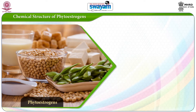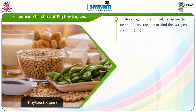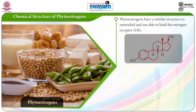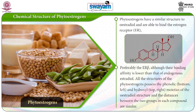The phytoestrogen classes mentioned above have a similar structure to estradiol, that is the naturally occurring estrogen, and are able to bind to the estrogen receptors, preferably the beta estrogen receptors, although this binding affinity is lower than that of endogenous estradiol. All structures of phytoestrogens possess the phenolic and the hydroxyl moieties of the estradiol structure, and the distances between the two groups in each compound are similar.